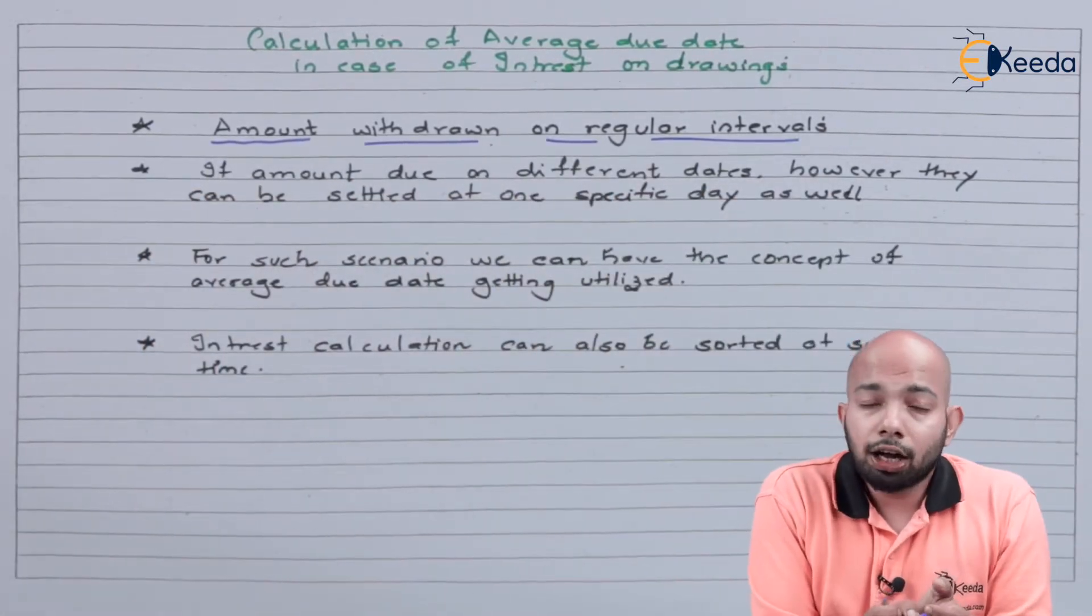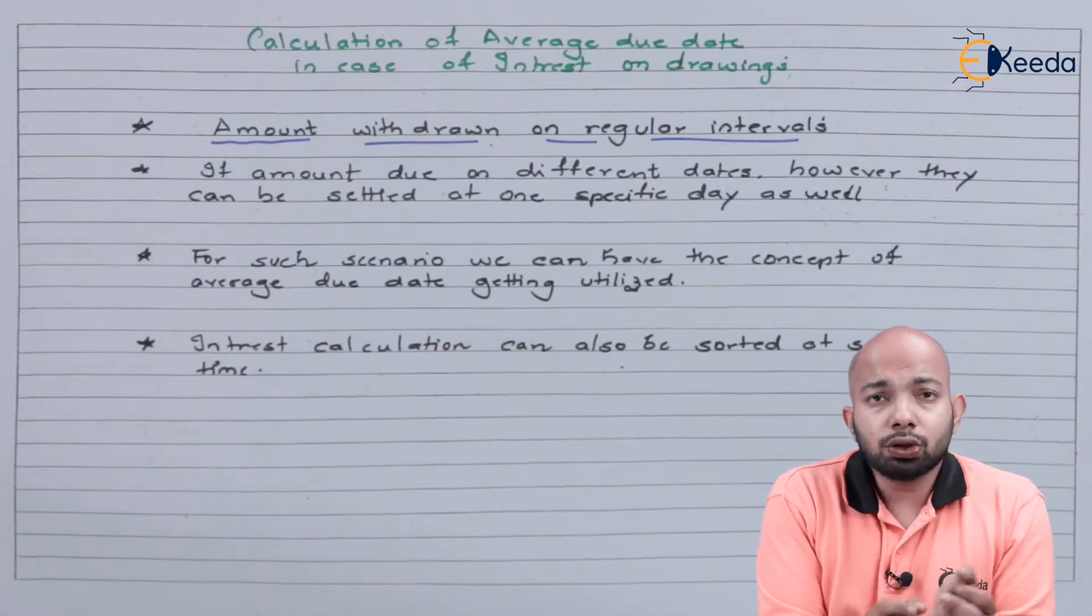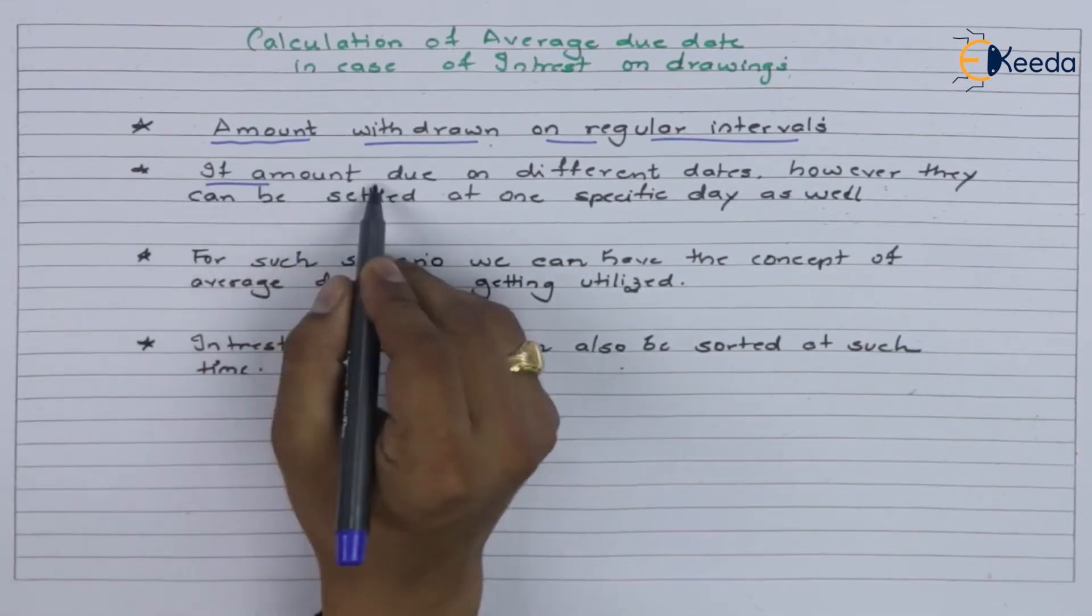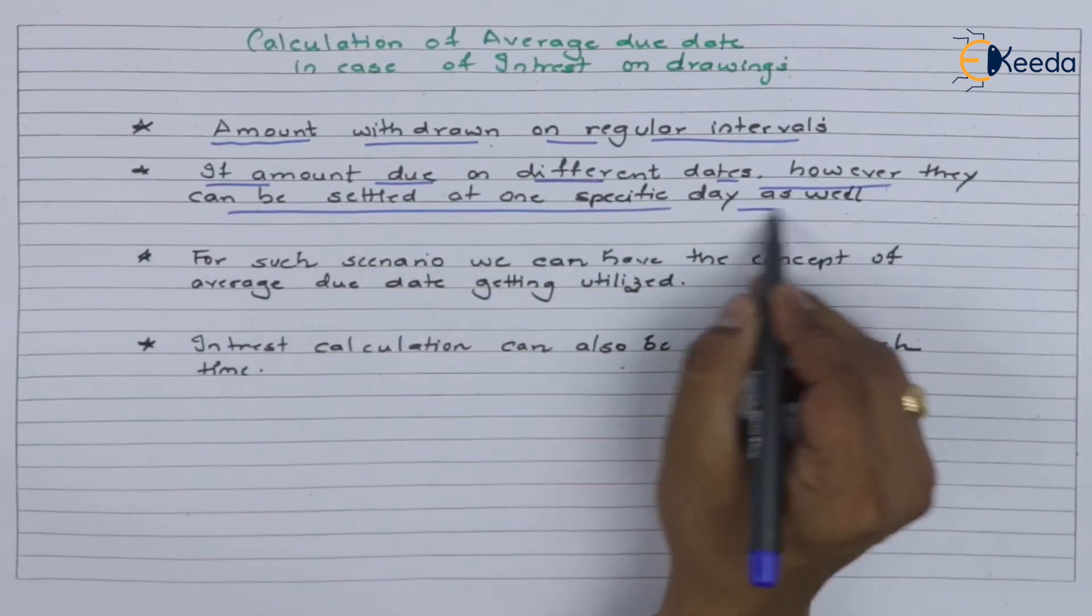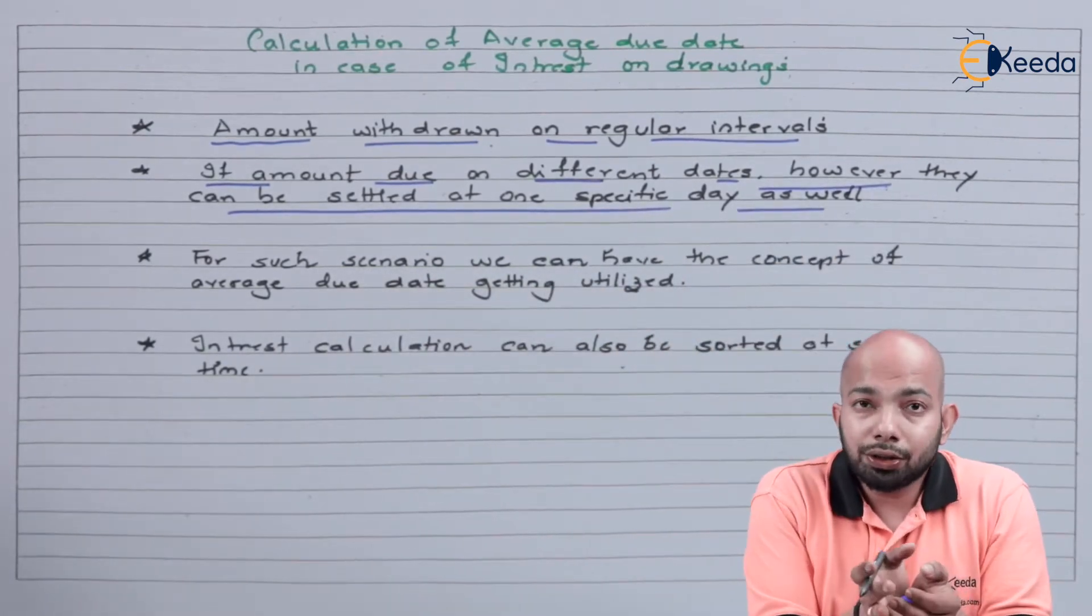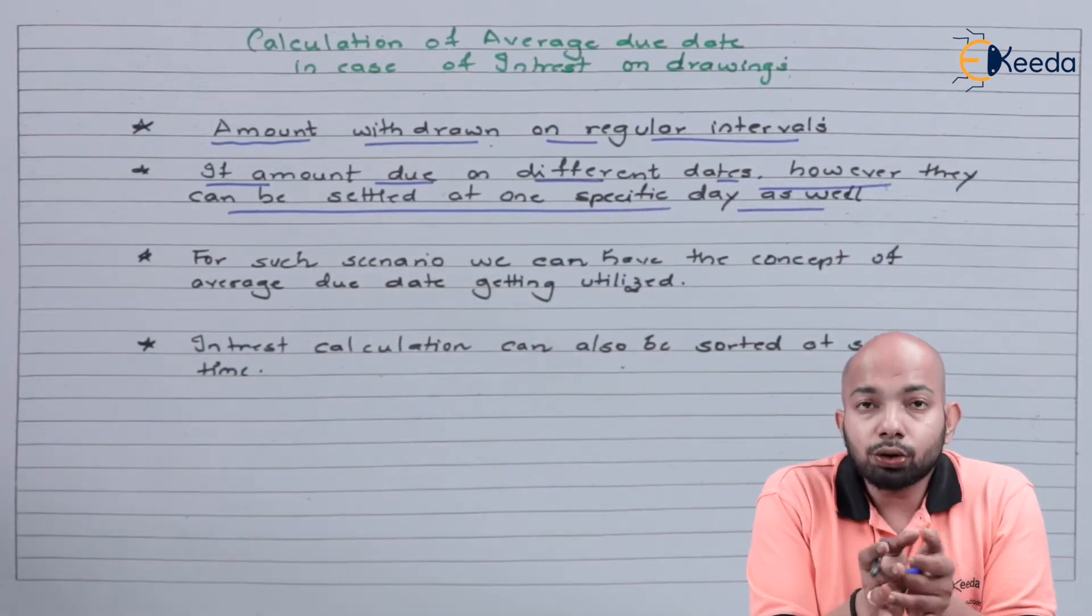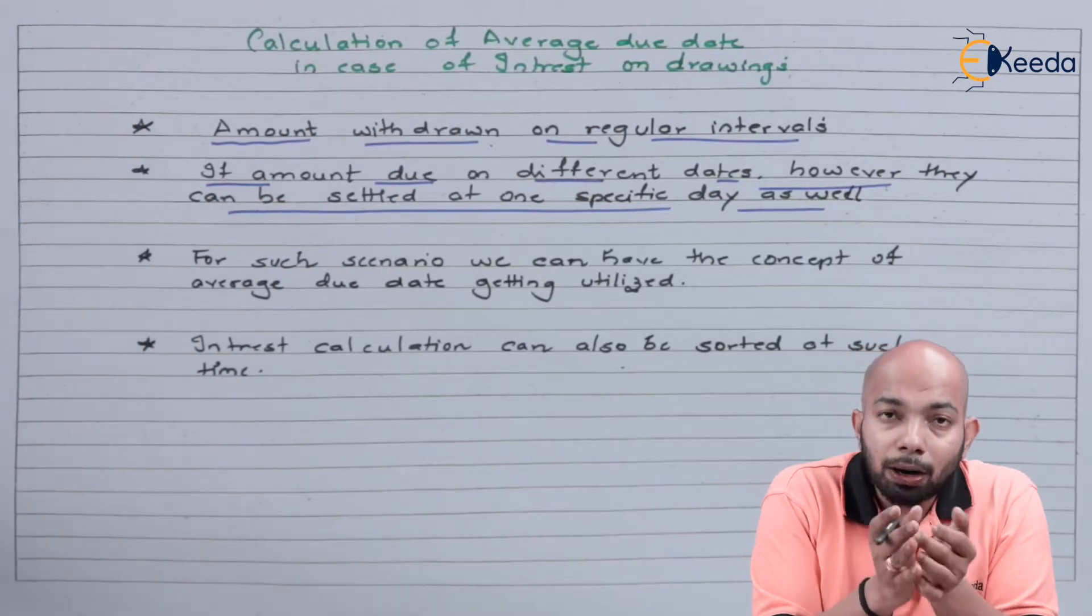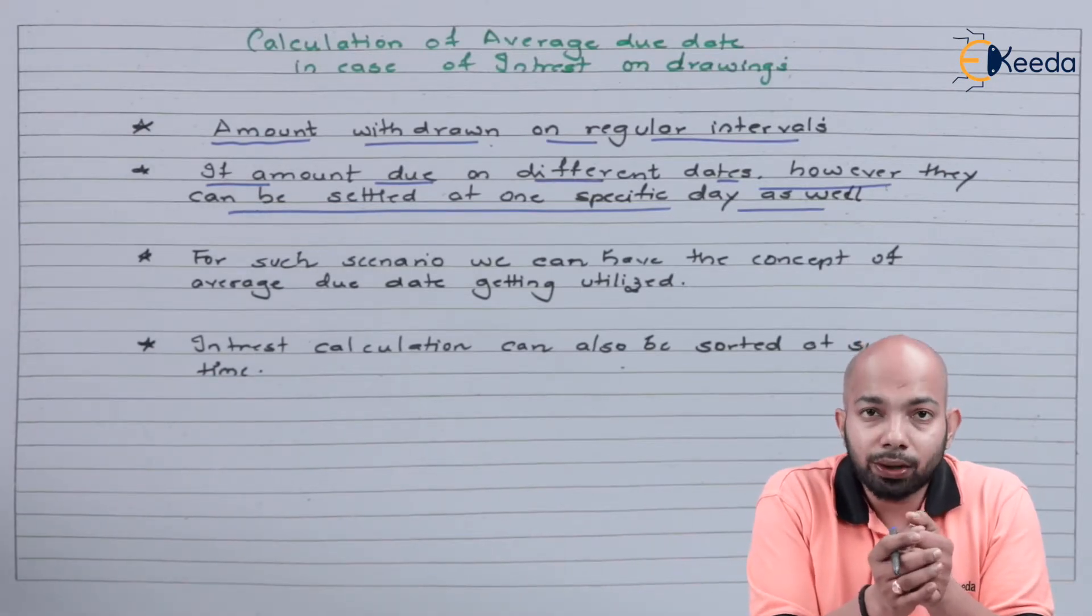Drawings are basically the amount that is withdrawn on regular intervals or maybe any time intervals. If there are amounts that are due on different dates, you can also make sure that the amount is paid off on one specific day as well.